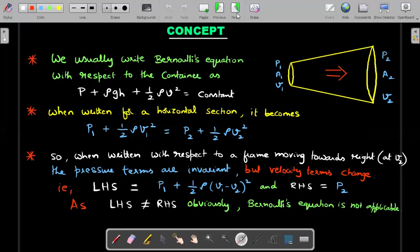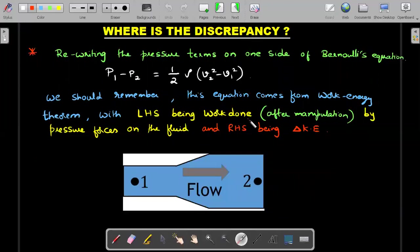So let's see where the discrepancy is. All this boils down to your basic understanding of how we derive Bernoulli's equation. It's a theorem, not a law. It's derived from the idea of work energy theorem.